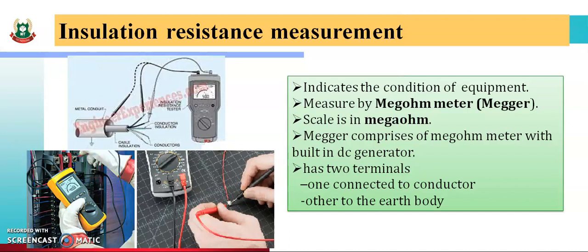For high voltage switchgear, a 1000 volt or 5000 volt DC megger is preferred. The insulation resistance of high voltage switchgear is very high, and the voltage applied for the resistance test varies according to the voltage rating of the switchgear.